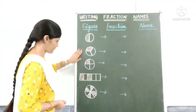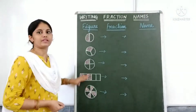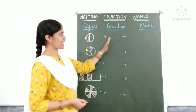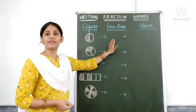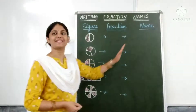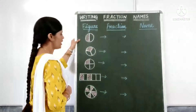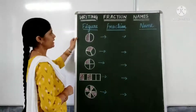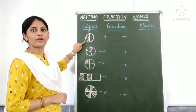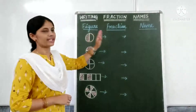I have drawn some figures and I have shaded some of the parts in each figure. First we will write the fraction for the figure and then we will write the name for the fraction. Let's start. Here I have drawn 5 figures. We are writing fraction names — first we will write the fraction.